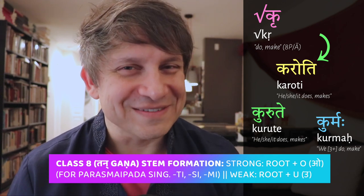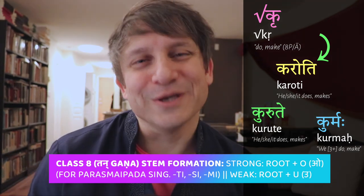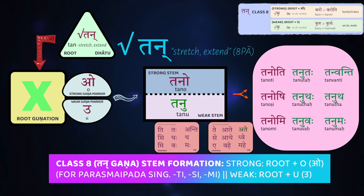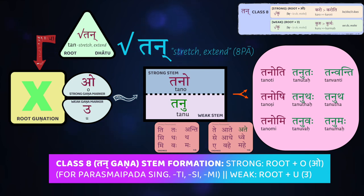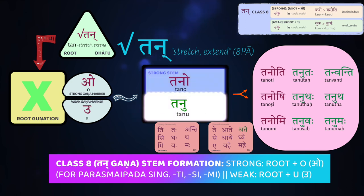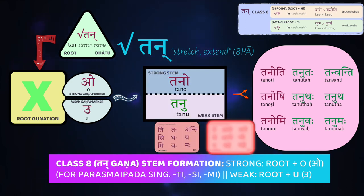Just to make our lives a little bit more challenging, kuru is going to have some irregularities. Let's jump right into how we form the stem from the root in the tan gana. This works almost the same way as the fifth class — you don't do anything to the root, but strong and weak alternation gets determined by adding two different kinds of gana markers to that root. For the strong stem, we add o to the root. For the weak stem, we add short u to the root. When we add our endings, parasmaipada and atmanepada, we'll encounter a little bit of sandhi here and there, but for the most part it's a fairly straightforward situation.